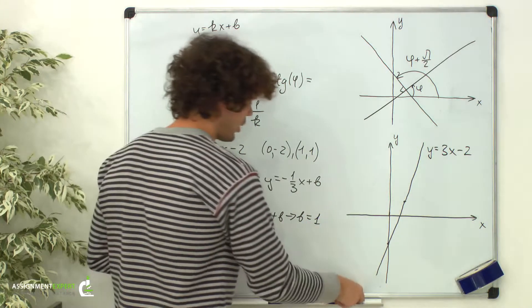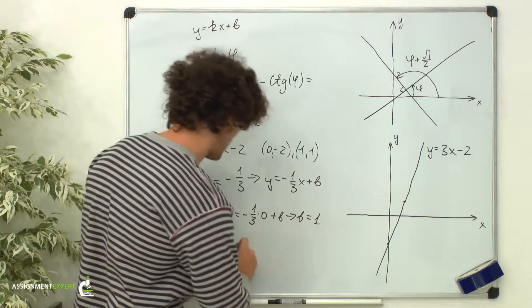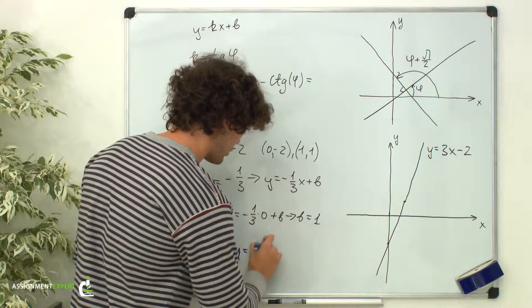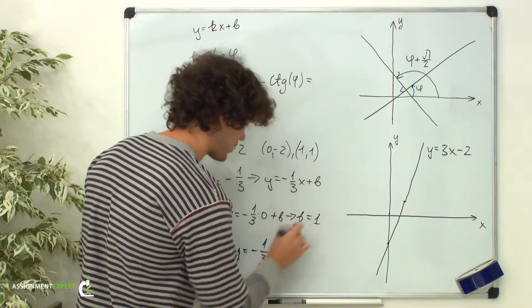So, the equation of the perpendicular line is y equals negative 1 third times x, plus 1.